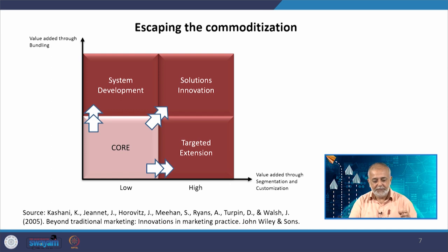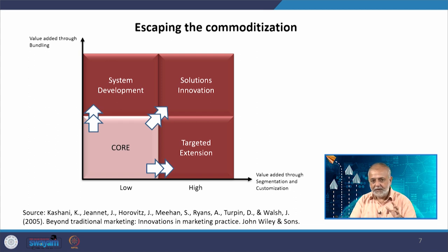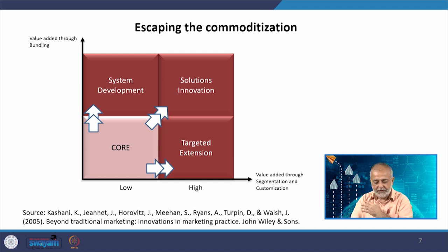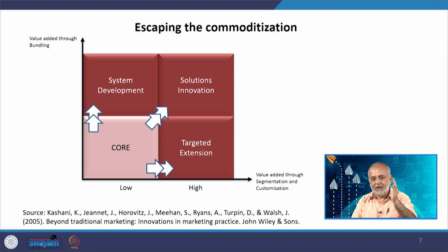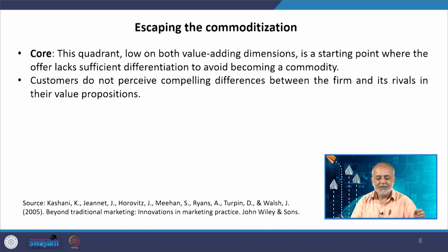The authors develop a two-dimensional matrix structure: the vertical axis is value added through bundling, and the horizontal axis is value added through segmentation and customization — read as micro-segments and individual-level targeting. The situation must move towards three directions: system development, solutions innovation, and targeted extension. The most idealistic form would emerge from combining these, but let us talk about them one by one.